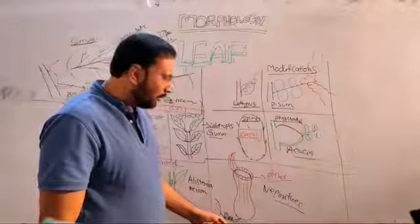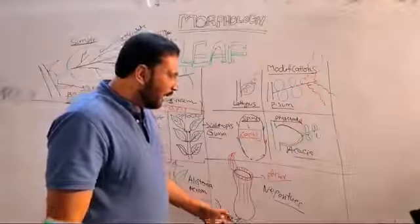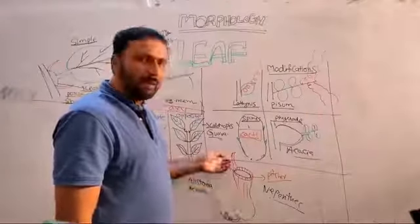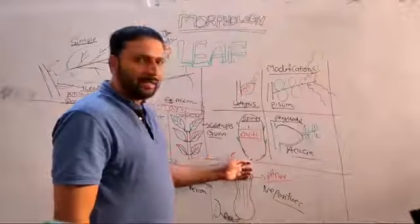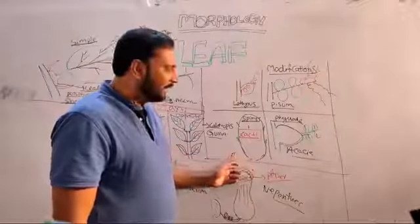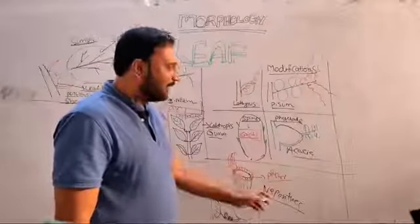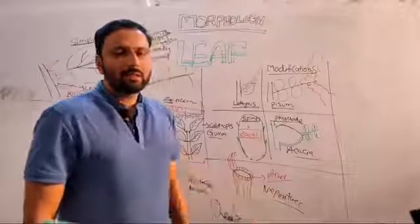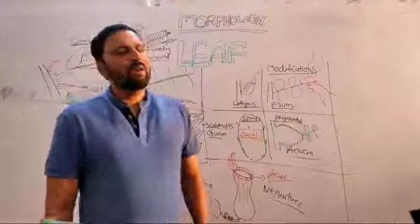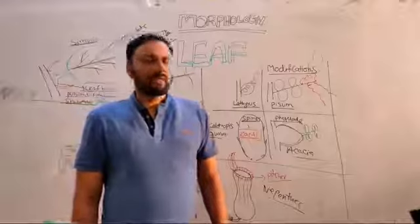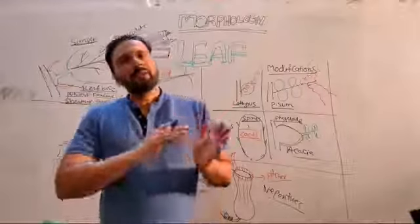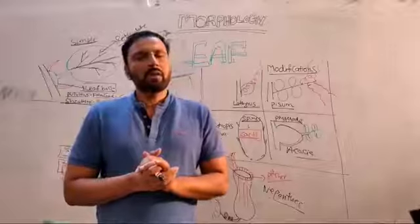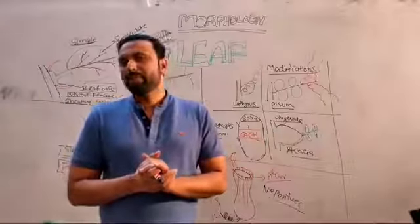Insectivorous plants — example Nepenthes. In Nepenthes, part of the petiole is modified into phyllode, part of the petiole is modified into tendril, and the lamina is modified into a pitcher; the leaf tip is modified into a lid that attracts insects — called pitcher plant. Other examples include Dionaea (Venus flytrap), Utricularia, and Drosera, where leaf modification is present to attract insects.